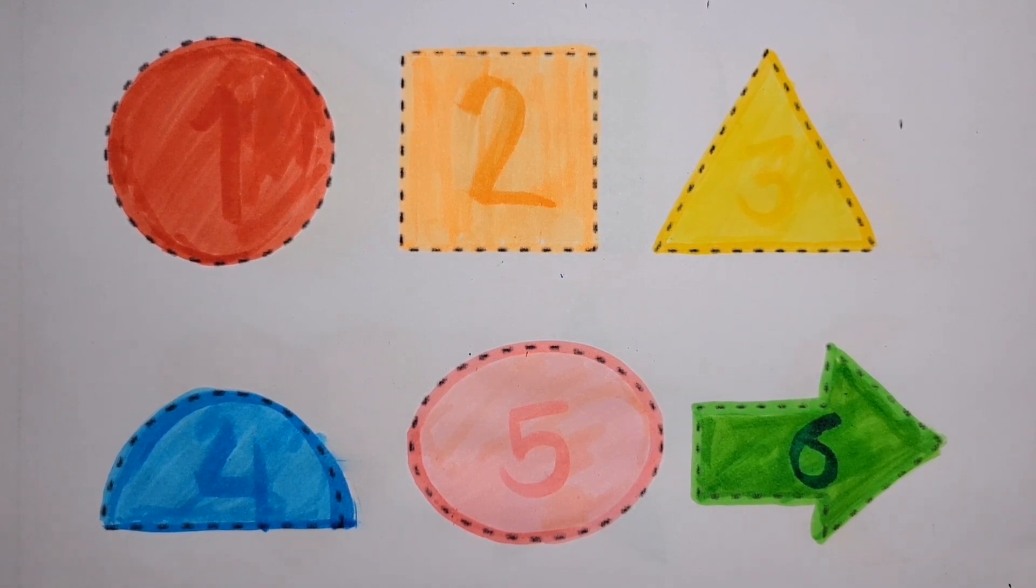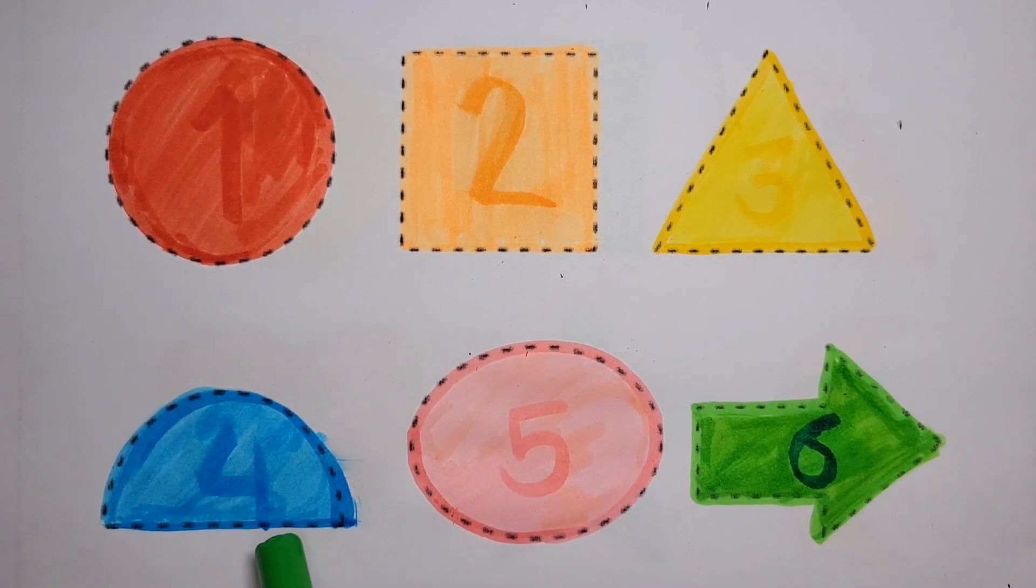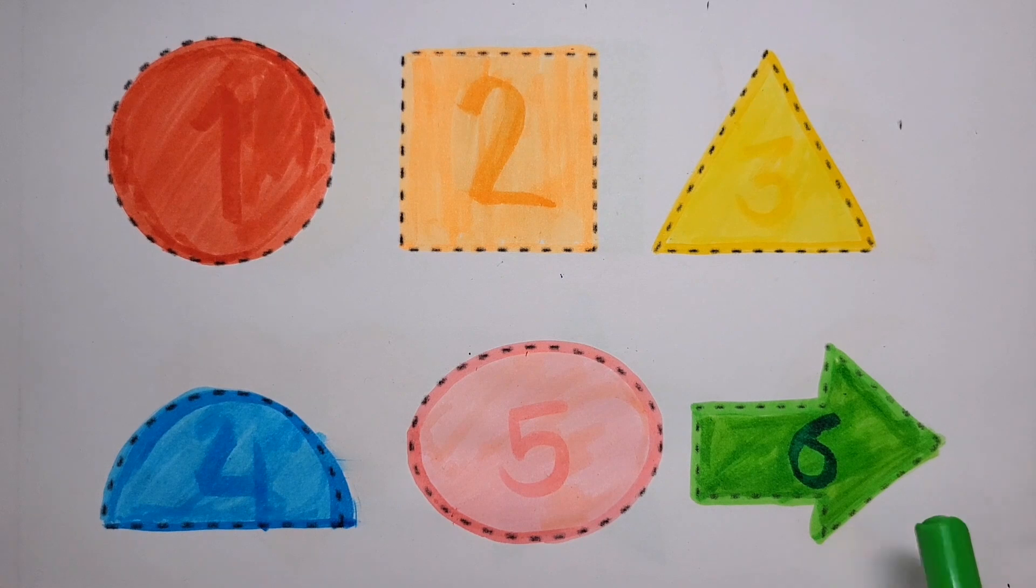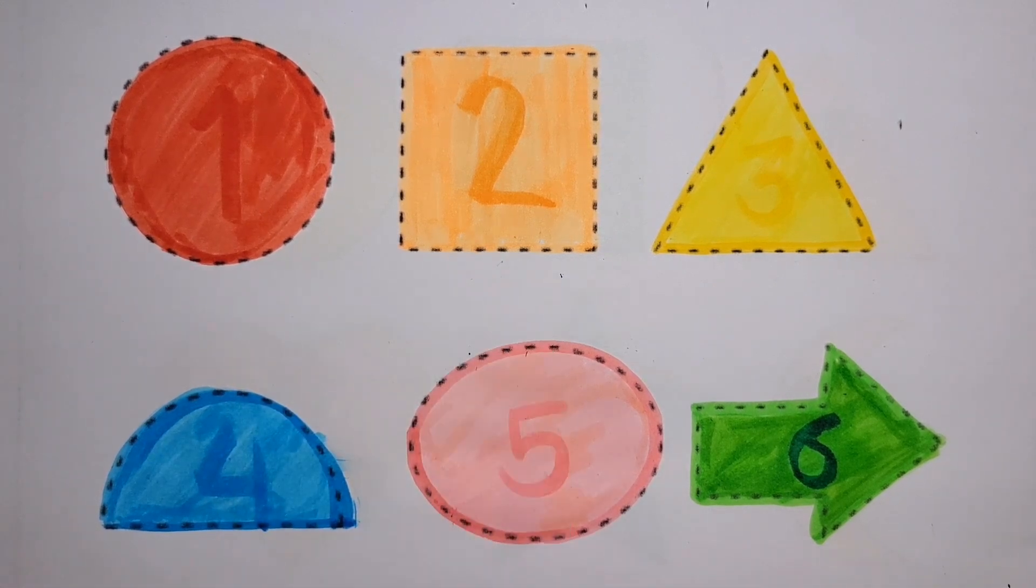Let's learn shape and numbers. One number, two number, three number, four number, five number, six number. Circle shape, red color. Square shape, orange color. Triangle shape, yellow color. Semi circle shape, blue color. Oval shape, pink color. Arrow shape, green color.